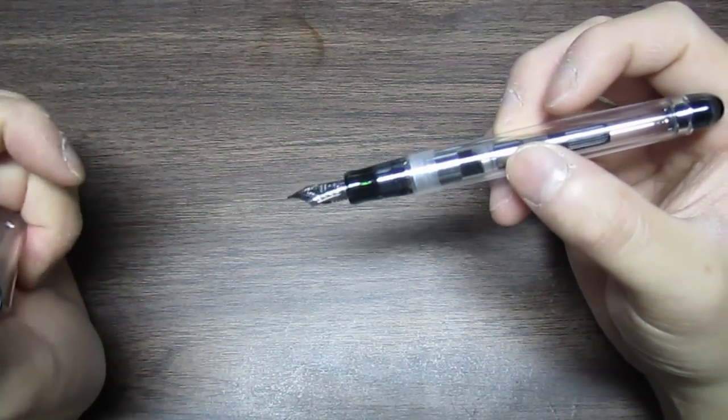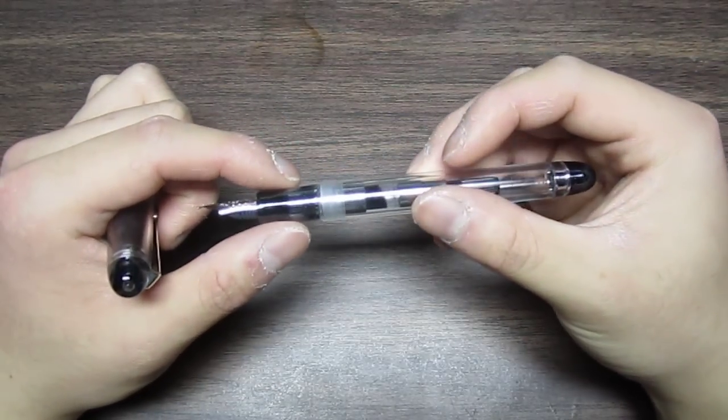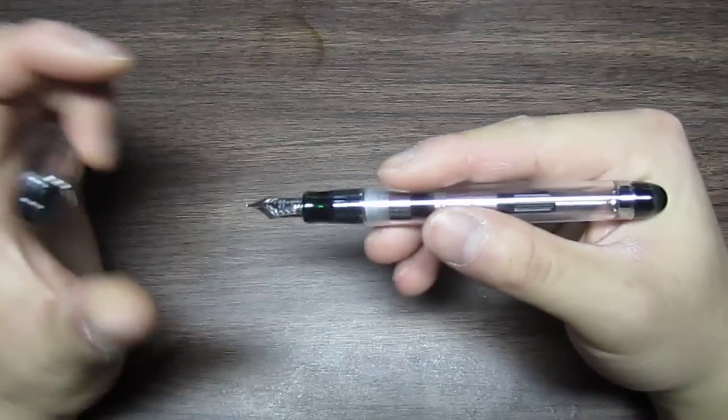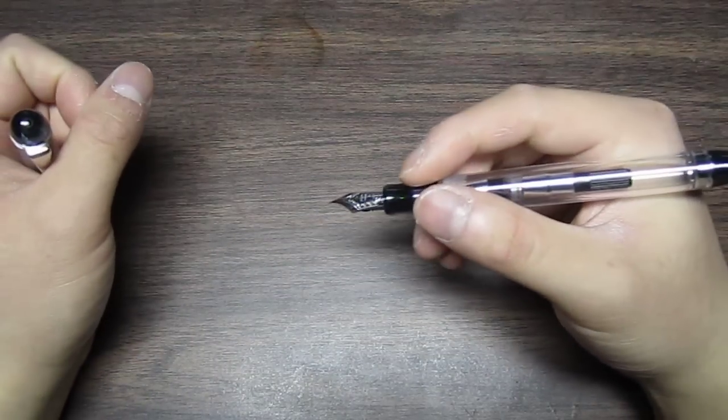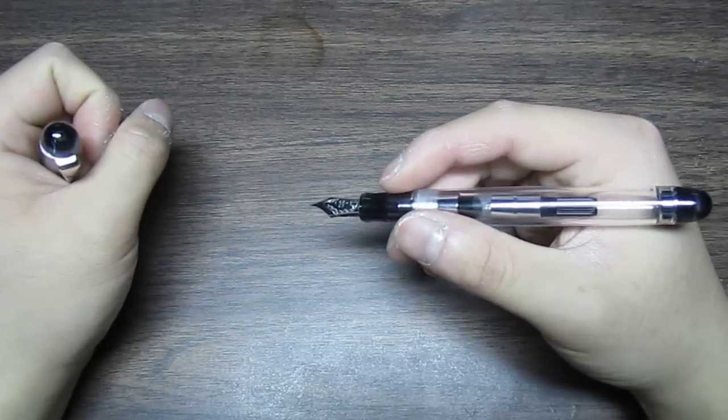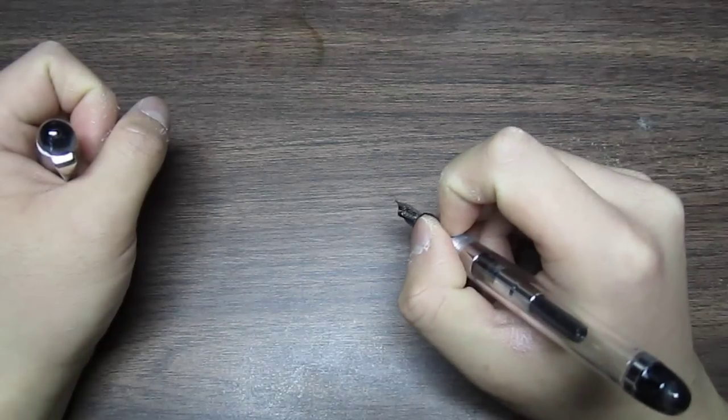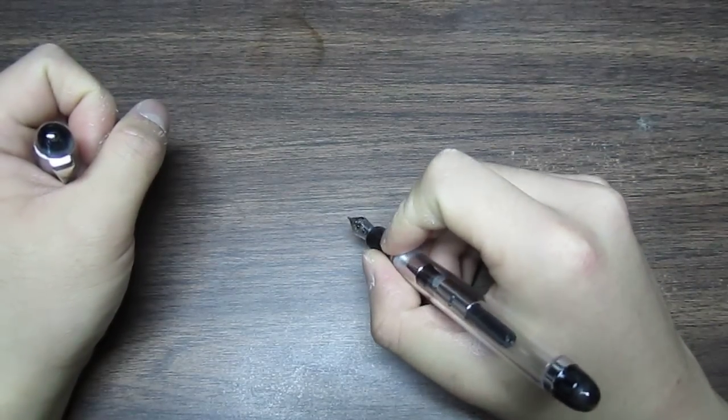I'm not gonna go into too much detail about the construction and components in this video, but basically, you write with a fountain pen the same way you would write with any other pen. There are some differences though. With a fountain pen, you do have to make sure that you align the nib properly up against the paper, and you have to make sure that you don't put a lot of downward pressure.